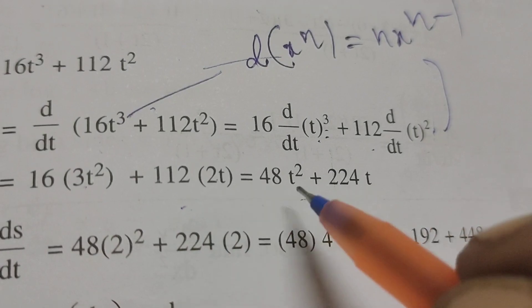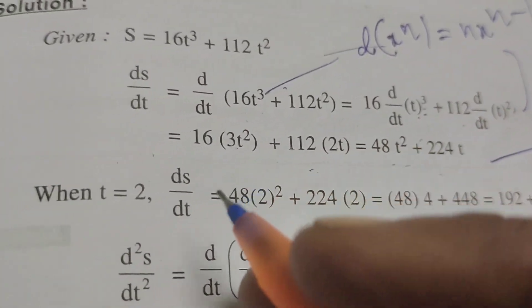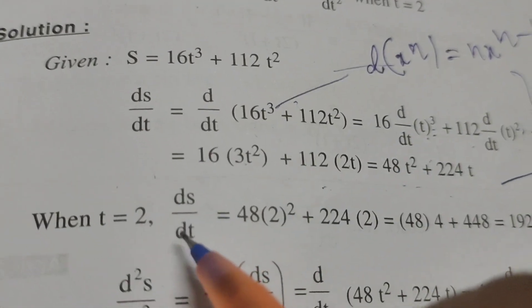Simplifying this, we get 48t² plus 224t. Now when t equals 2,